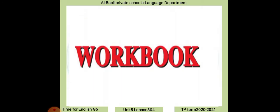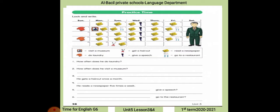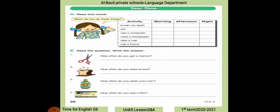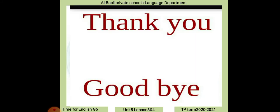Now with the homework. Workbook, practice time. Look and write — numbers five and six, write the answer and answer the following questions. Read and check: when do you do these things? Look at the schedule — morning, afternoon, or night. In exercise B, read the questions and write the answer about yourself. Thank you for watching and listening. Goodbye.